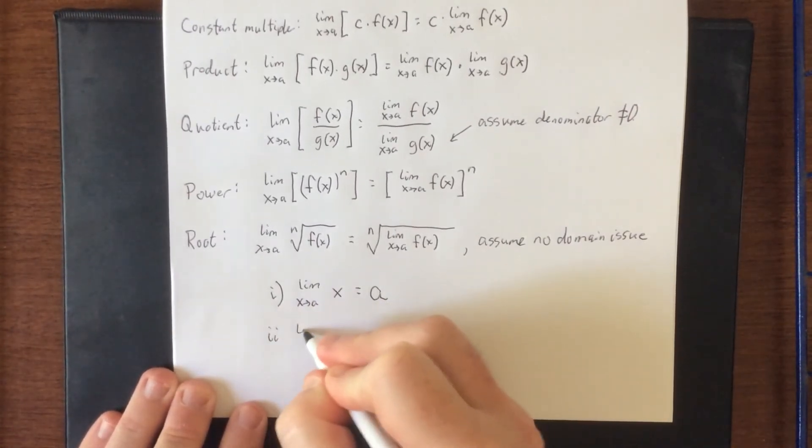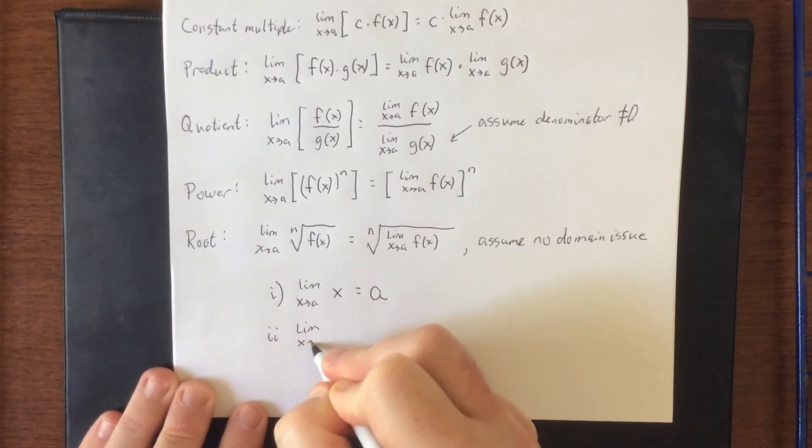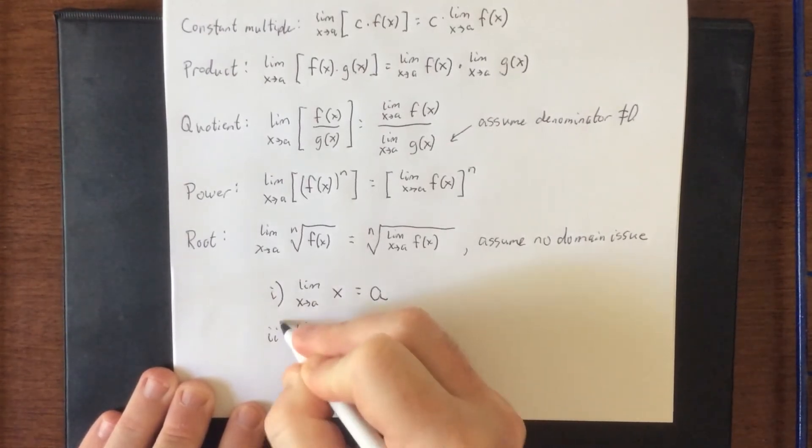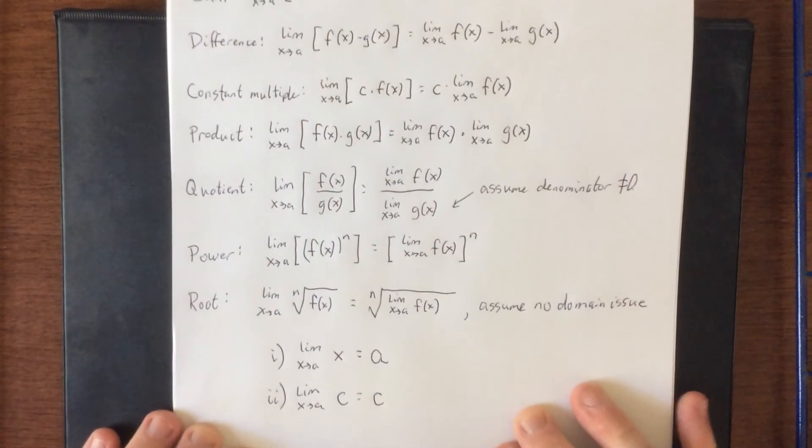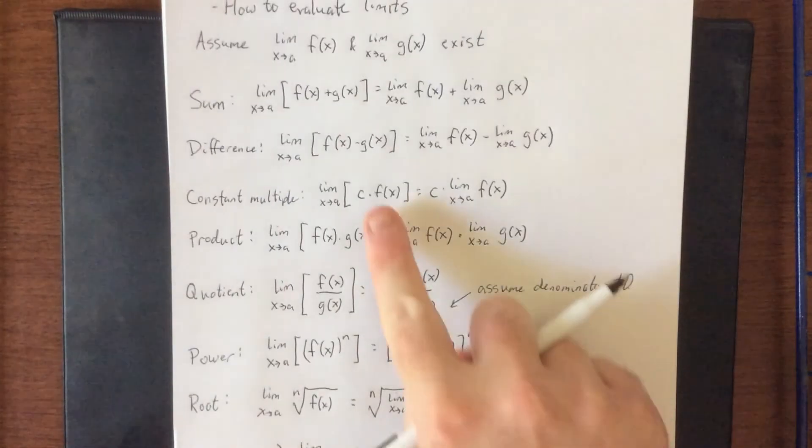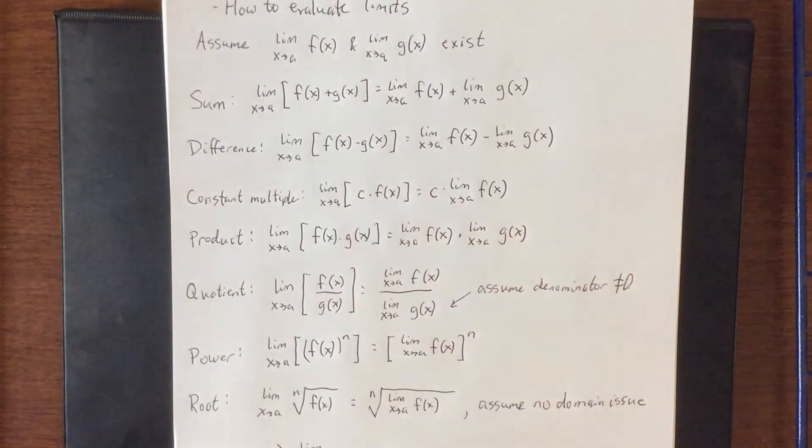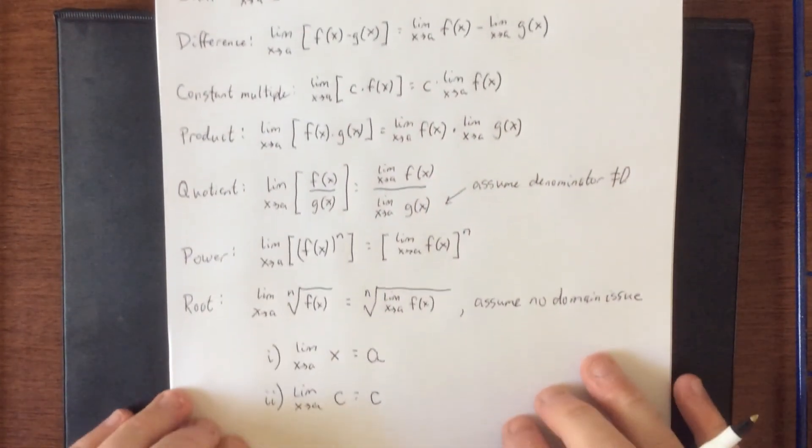Finally, if I take the limit as x approaches a of a constant, well, constants don't change. So it doesn't matter what x approaches, the function value is not going to change. Now, do be aware that a constant term versus a constant multiple can make this process a lot shorter than it needs to be.